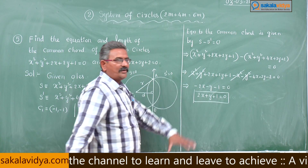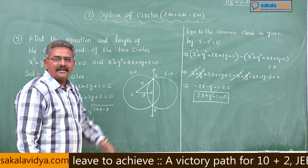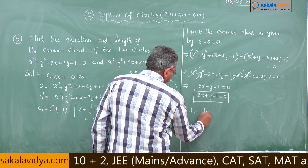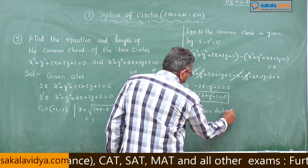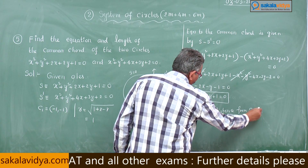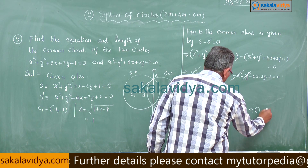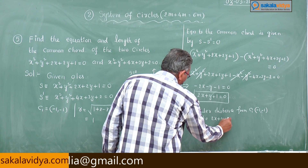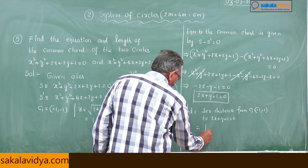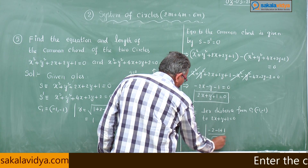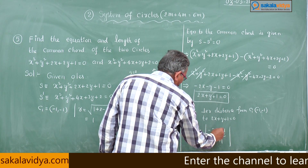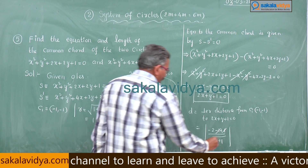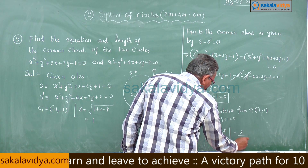Now find d, the perpendicular distance from C₁ = (−1, −1) to the line 2x + y + 1 = 0. That is |2(−1) + (−1) + 1| / √(4 + 1) = |−2 − 1 + 1| / √5 = 2/√5. So d = 2/√5 units.